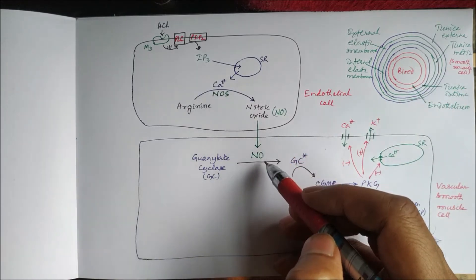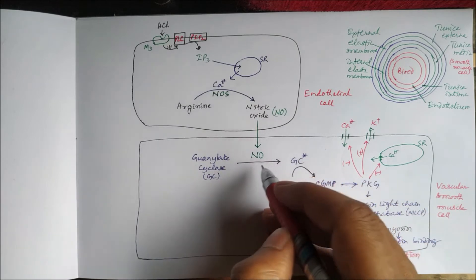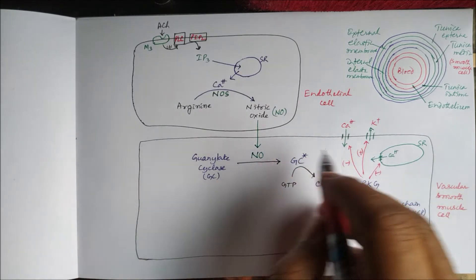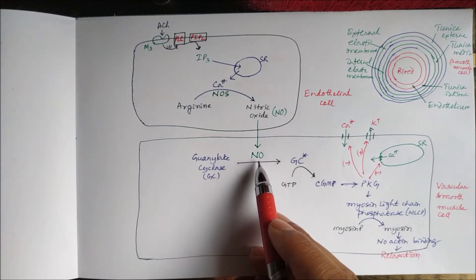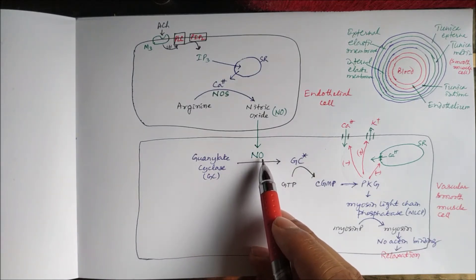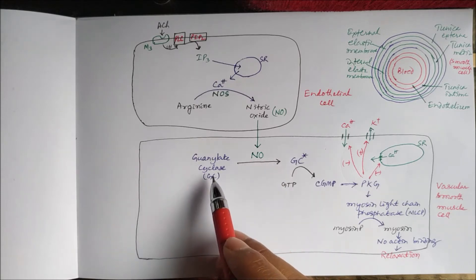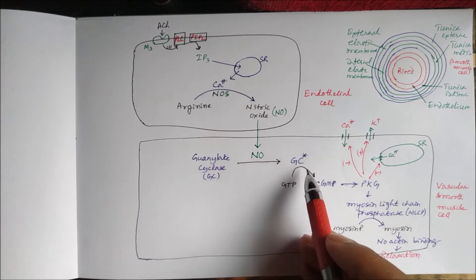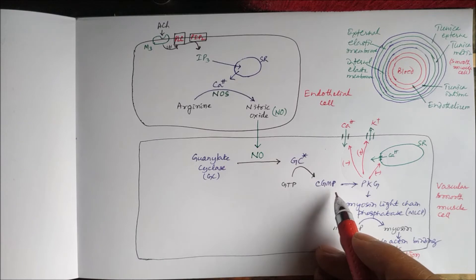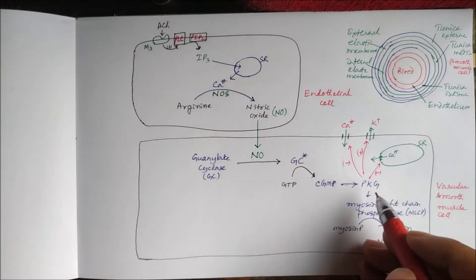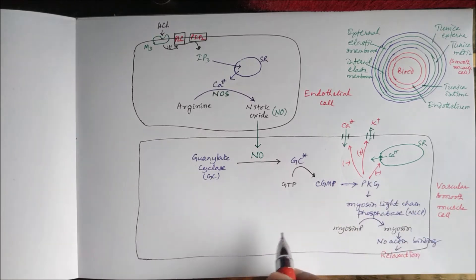In the vascular smooth muscle cell, nitric oxide acts as a second messenger. Nitric oxide activates the enzyme guanylate cyclase, which converts GTP to cyclic GMP. Cyclic GMP then activates protein kinase G.